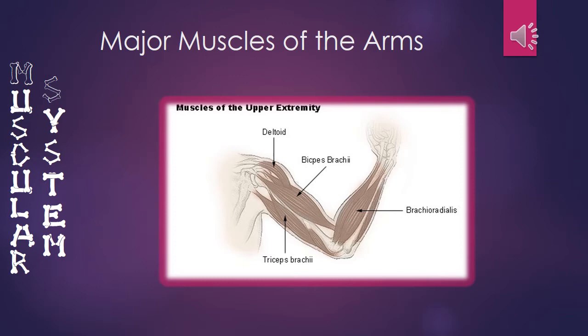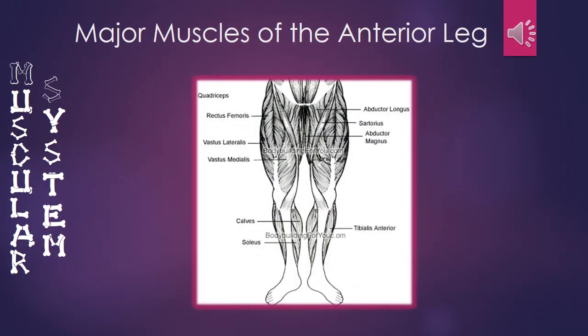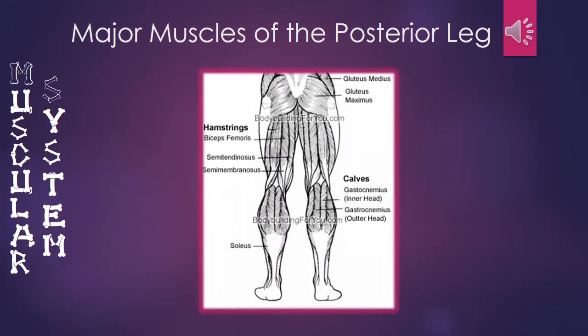The major muscles of the leg from an anterior view are the quadriceps. From a posterior view, starting from the top, the major muscles of the leg are the glutes, hamstring group, and the gastrocnemius.